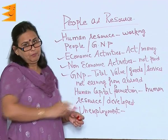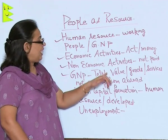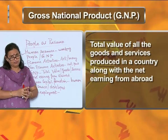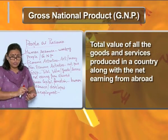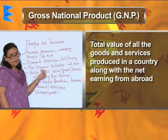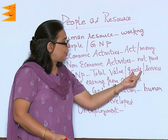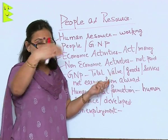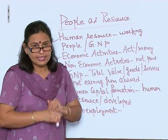Next is GNP. The gross national product of a country is in fact the total value of all the goods and services produced in a country, also adding to it the net earning from abroad. So all the earnings, whether of goods or services, the value of that within the country and the earnings from abroad contribute to the making of gross national product.